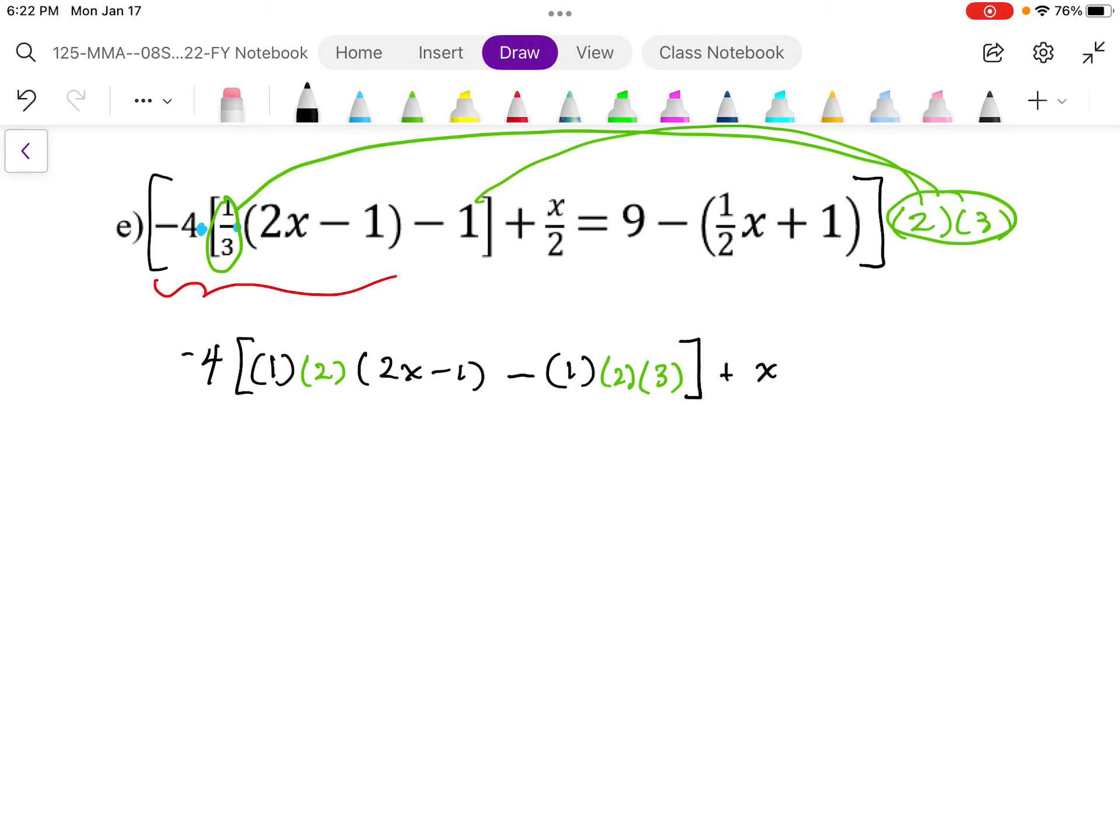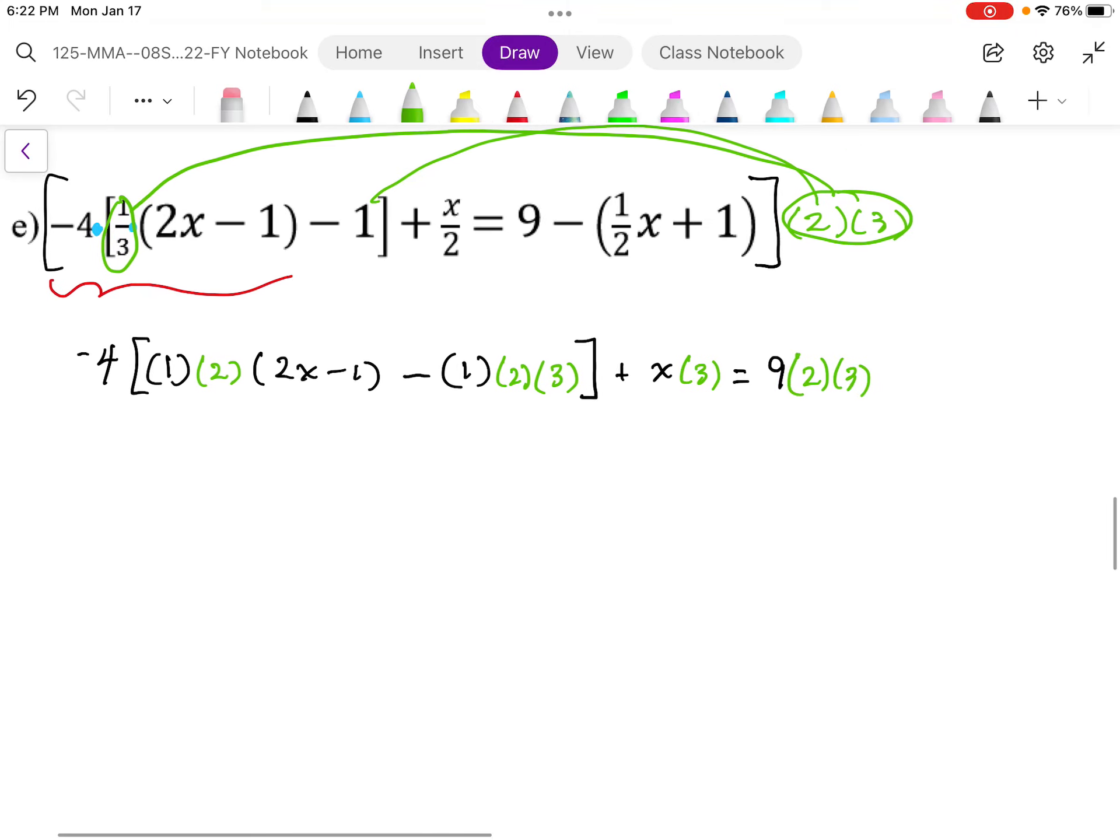Plus x, the times 2, divide 2, cancel, so I'm left with the times by 3 factor. Equals 9, nothing cancels here, so I have my times 2 times 3 here.